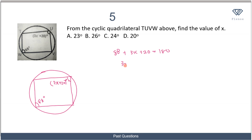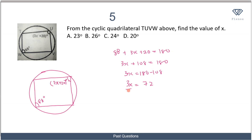So we can write: 88 plus (3x plus 20) equals 180. This gives 3x plus 108 equals 180, so 3x equals 180 minus 108, which is 72. Dividing both sides by 3, x equals 24 degrees. The correct option in this case is option D.